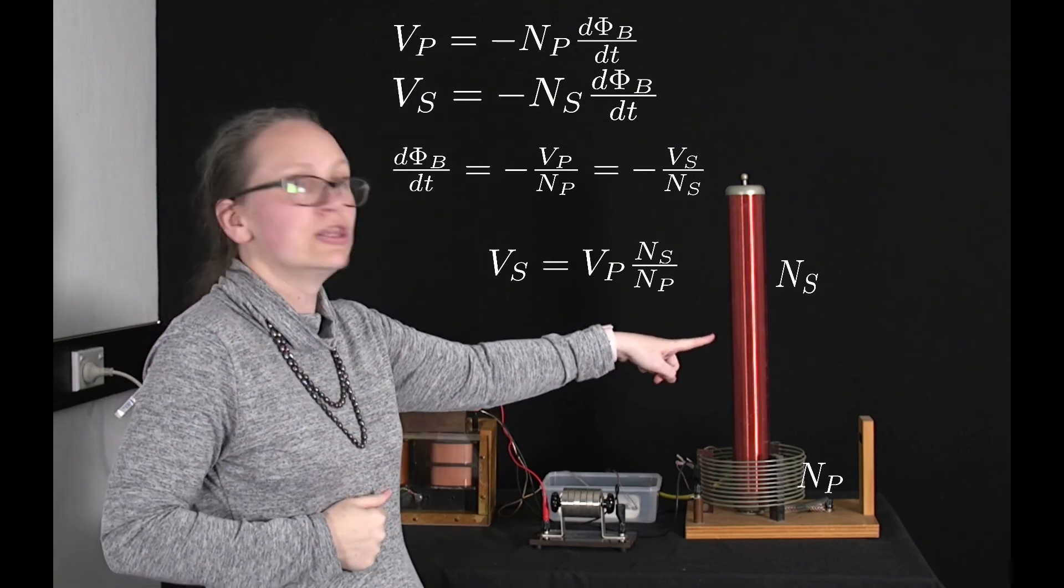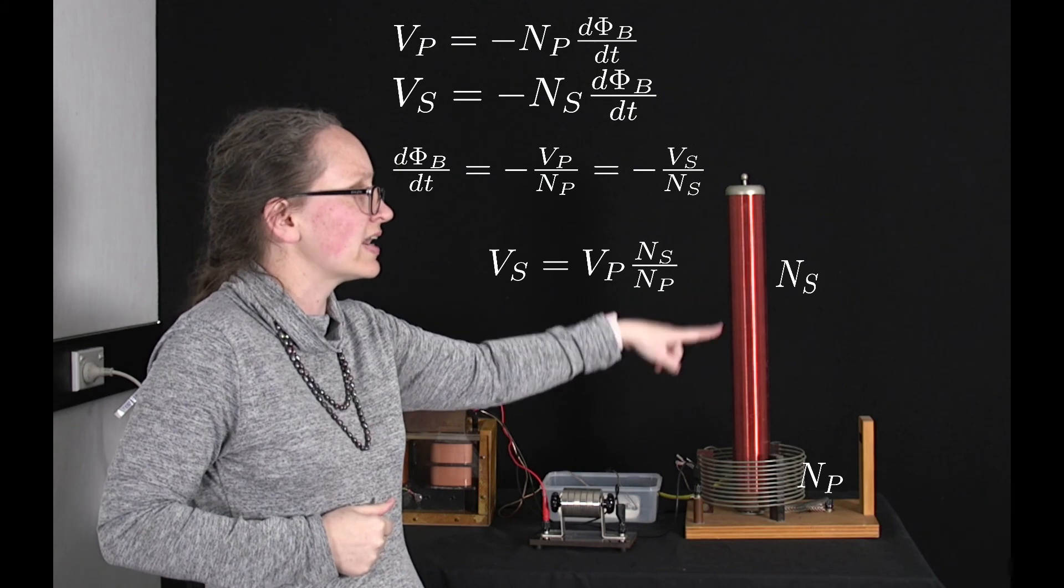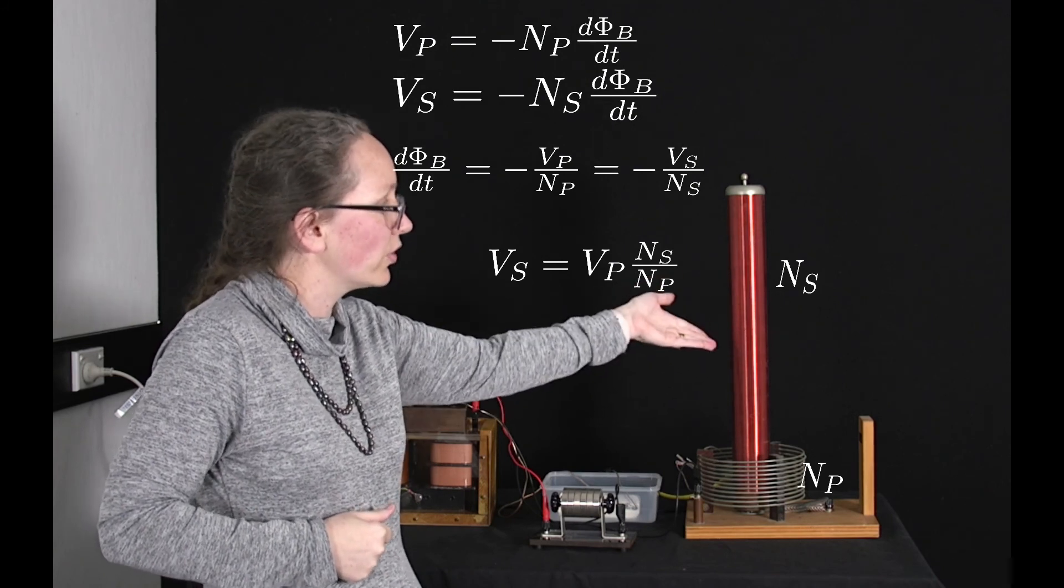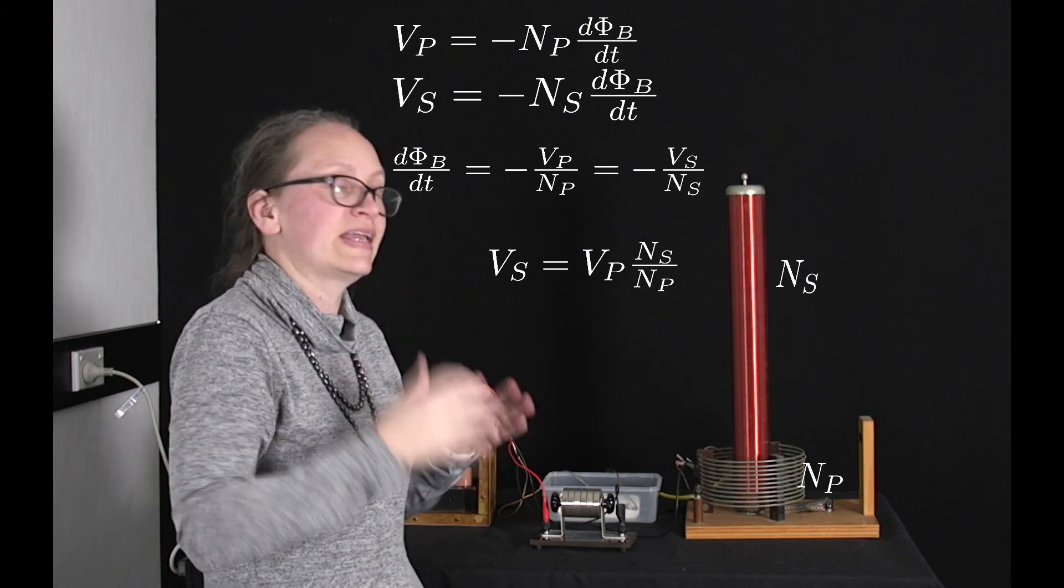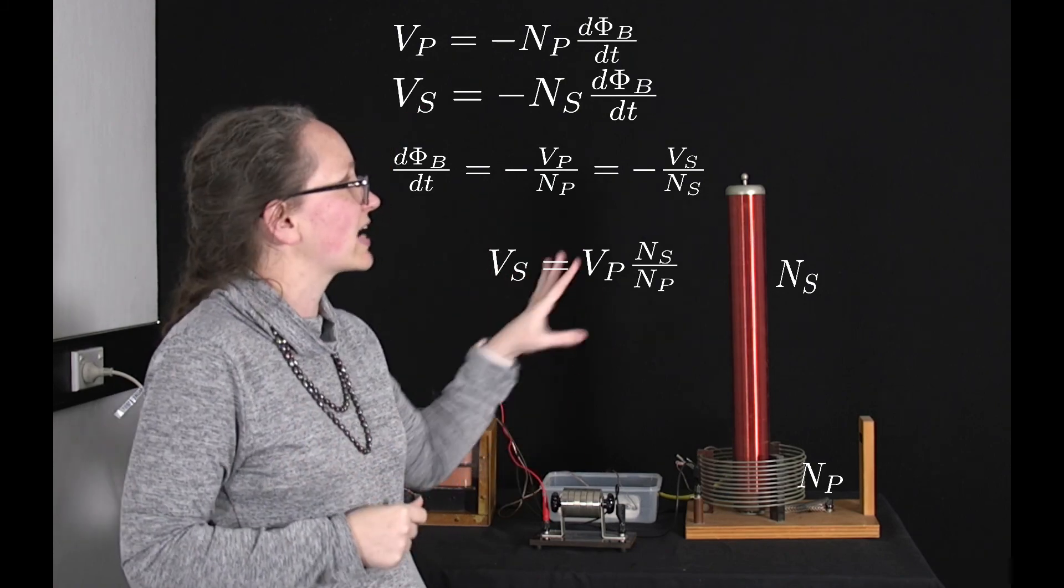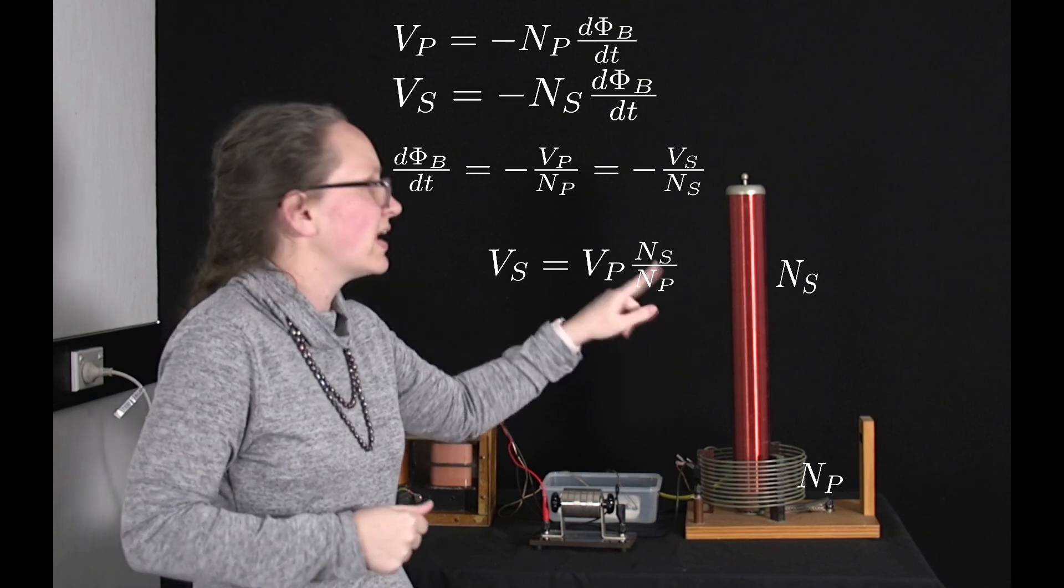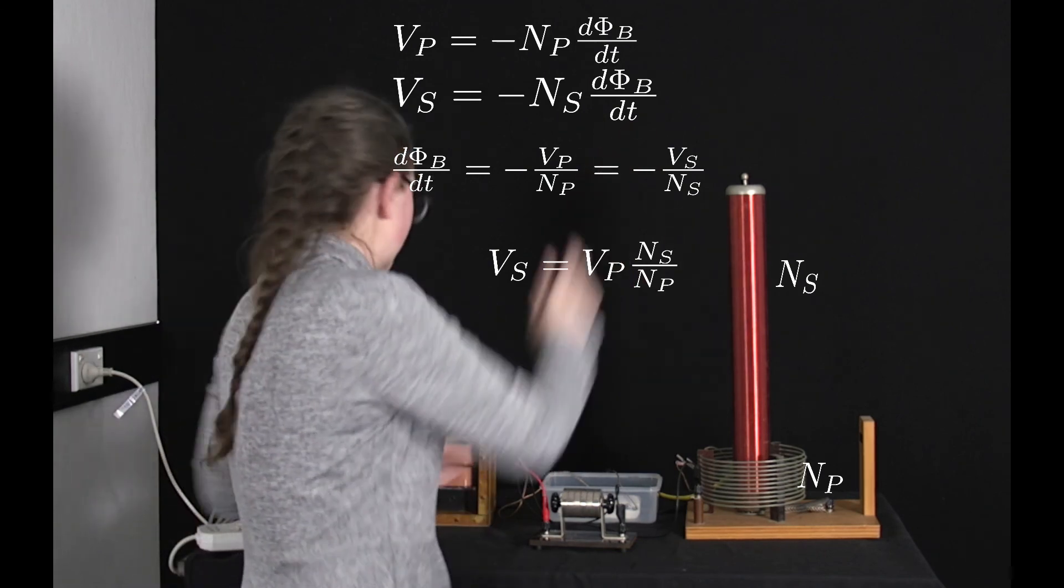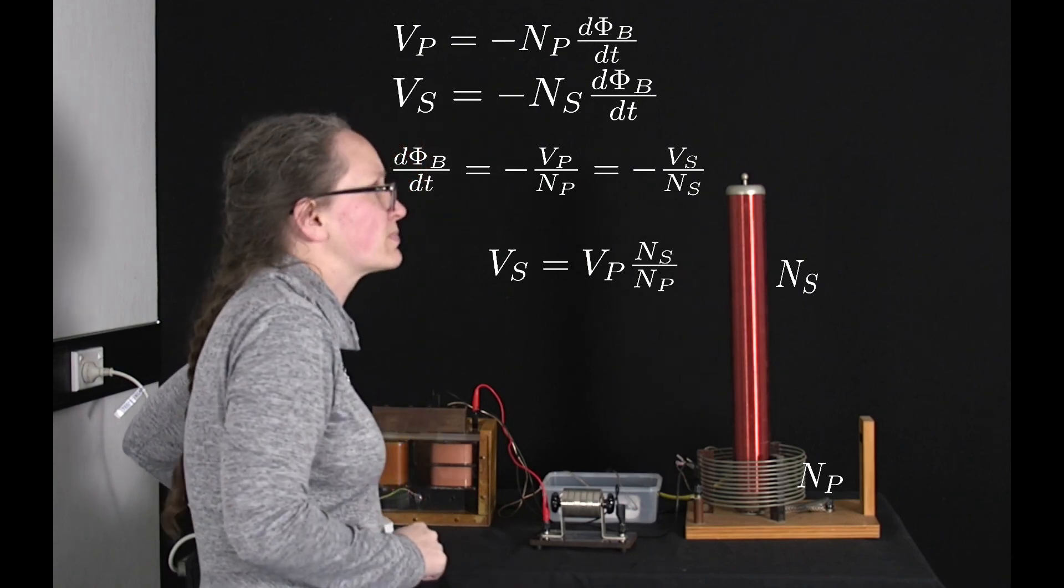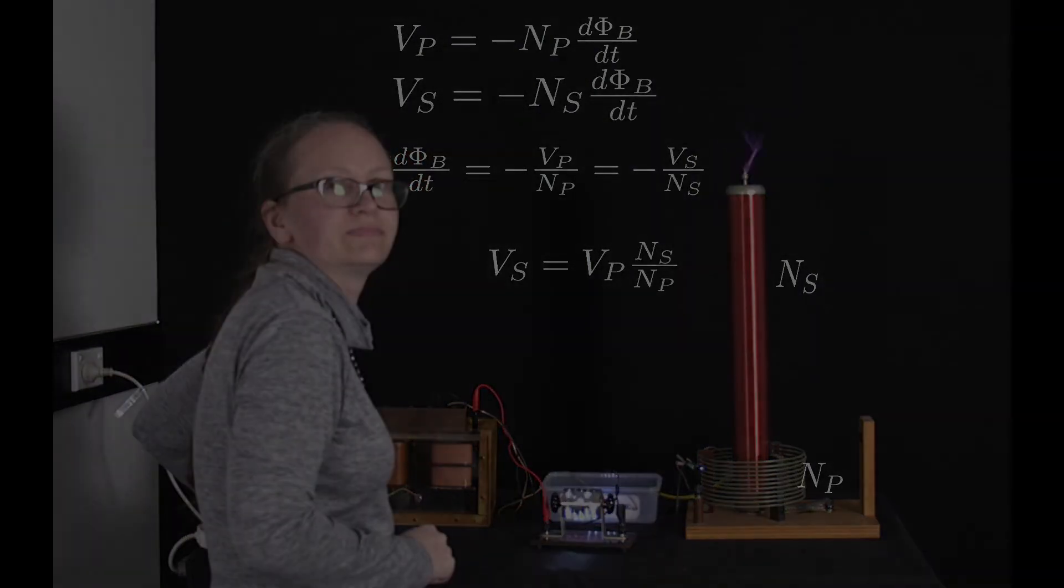So if we have a lot more coils in our secondary coil than in our primary coil then NS over NP is going to be a really high number and we're going to get a really large voltage induced in that secondary coil. And so that produces these beautiful sparks.